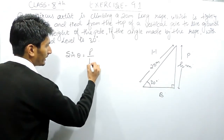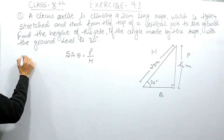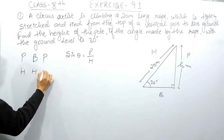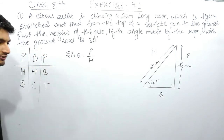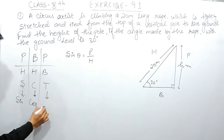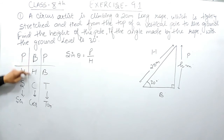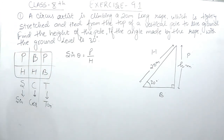Sine theta equals perpendicular upon hypotenuse. To remember these ratios, we use the formula: 'Pandit Badri Prasad, Har Har Bole, Sona Chandi Tole.' Here 'Sona' is sine, 'Chandi' is cosine, and 'Tole' is tangent. So sine theta = P/H (perpendicular over hypotenuse), cos theta = base over hypotenuse, and tan theta = perpendicular over base.